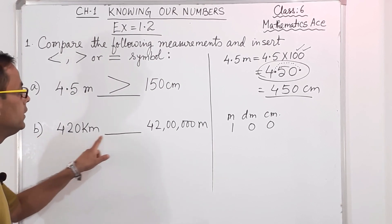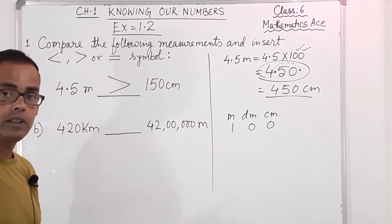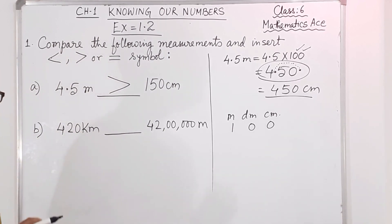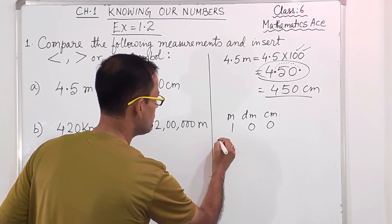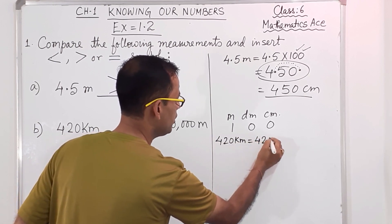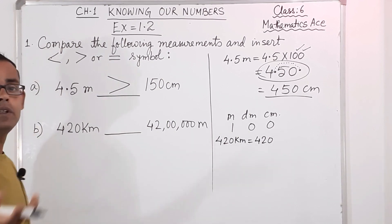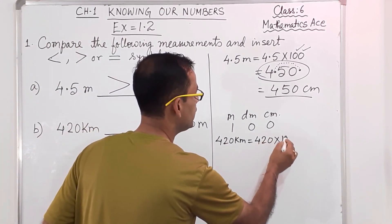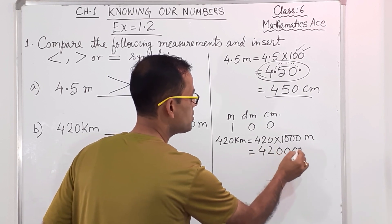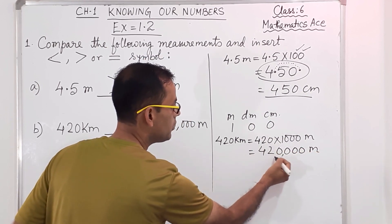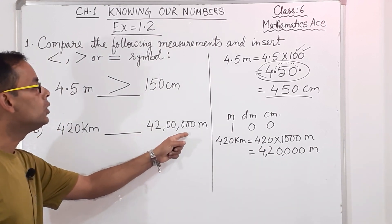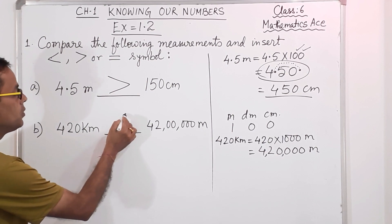Number B: 420 kilometer versus 42 lakh meter. The units are not the same. We have to make them same. So 420 kilometers — converting to meters, 1 kilometer means 1,000 meters, so we multiply by 1,000. 420 into 1,000 gives 4,20,000 meters. But this is 42 lakh meter which is 42,00,000. So 4,20,000 is smaller than 42,00,000 — we write smaller than.